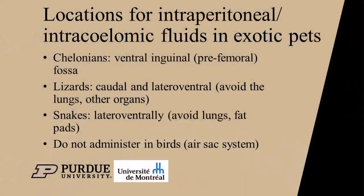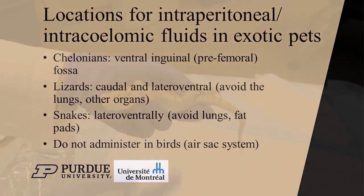For example, IP fluids in chelonians are limited to the ventral inguinal prefemoral fossa. In lizards, IP fluids are given as caudal and lateral ventral as possible in the coelom to avoid the lungs and other organic structures, and in snakes, they should receive their fluids lateral ventrally to avoid the lungs and the fat pads.